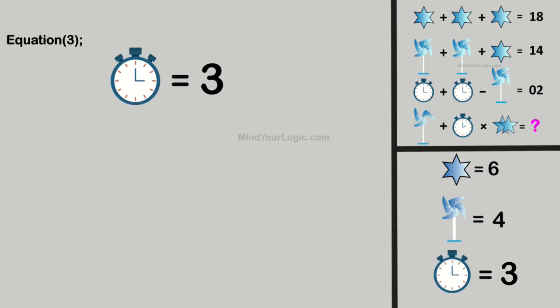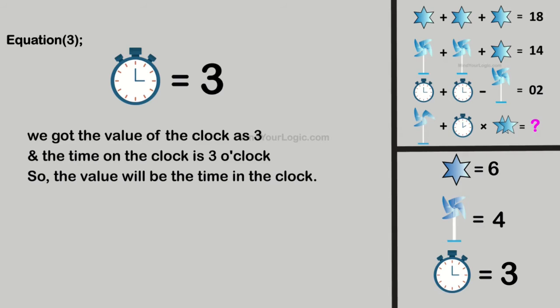We got the value of the clock is 3, and the time on the clock is 3 o'clock. So the value will be the time on the clock.